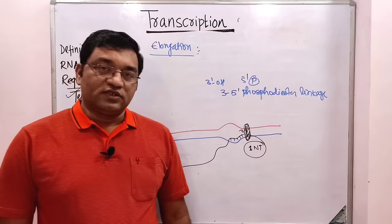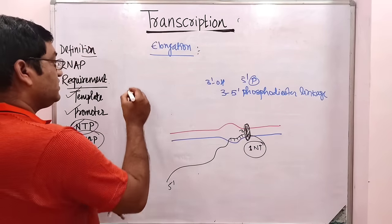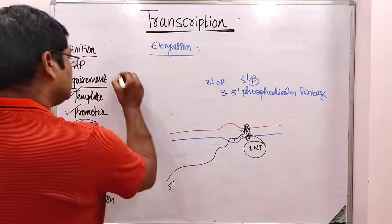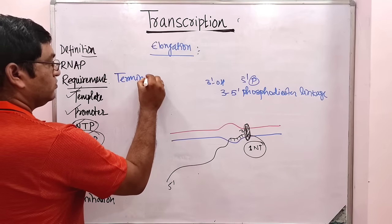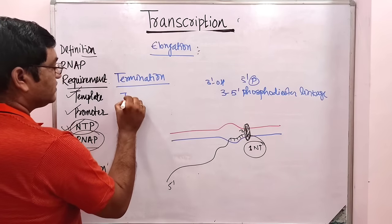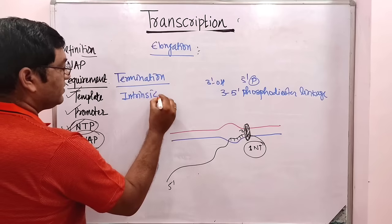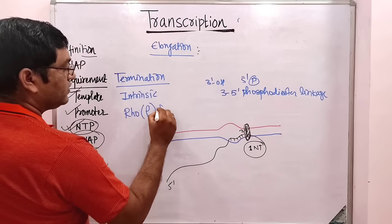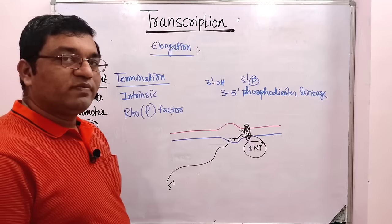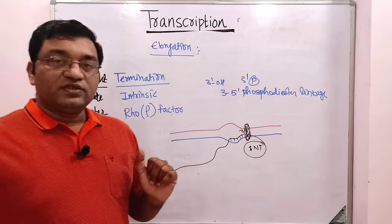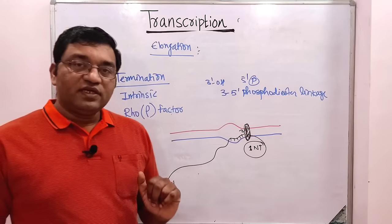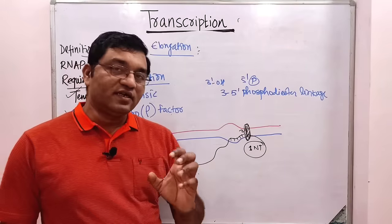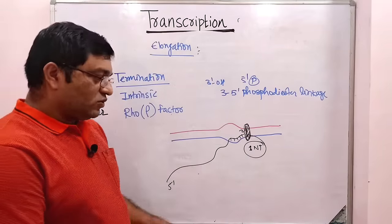Now termination. Two theories are given for the termination process. The first one is intrinsic termination. The second one is Rho factor-dependent termination. These are the two mechanisms involved in the termination. In intrinsic termination, there are signals in the growing RNA molecule which act as a signal for termination of the transcription process.